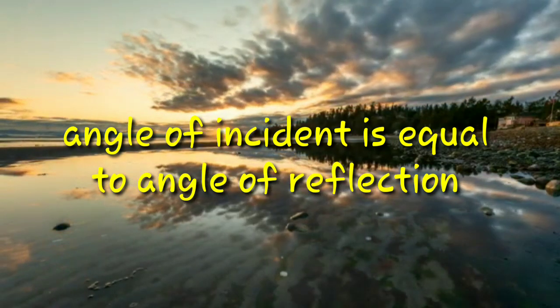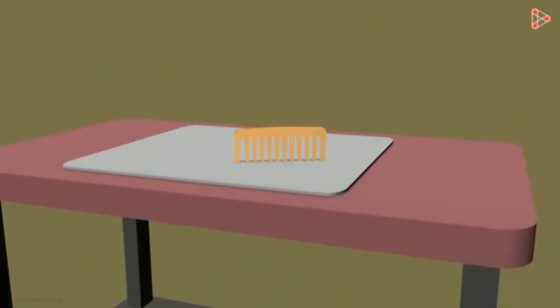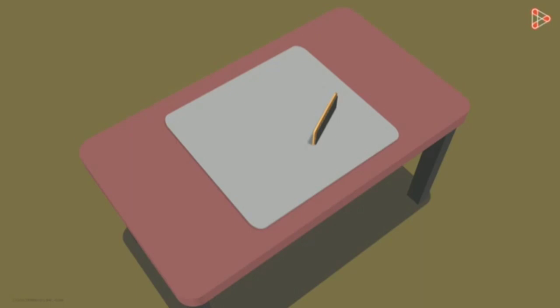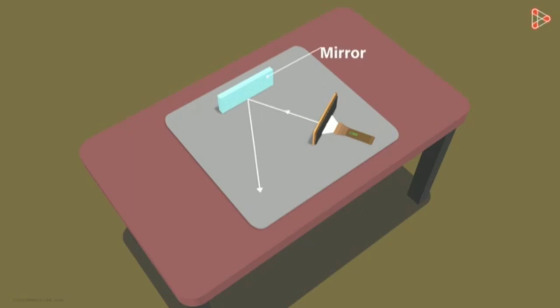Let us do an experiment. We take a white chart, cover it with dark paper, and make a small slit. We use a circular light source to make a thin beam of light, and place a plane mirror. We can see that the ray is reflected in the plane mirror.